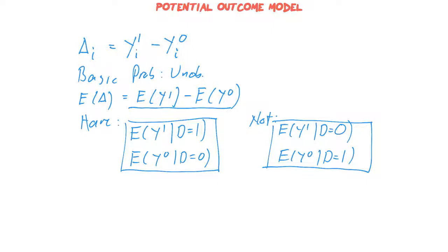Given this problem, the only way to make progress would be to make some assumptions or collect some other information that could actually break this dependence we have between the selection mechanism, that is whether you get treatment or not, and the outcome we have here.